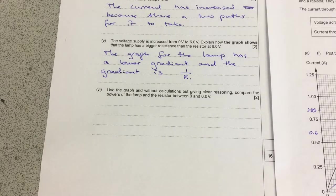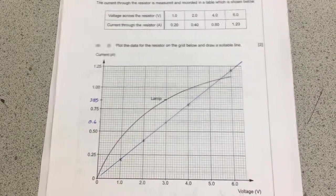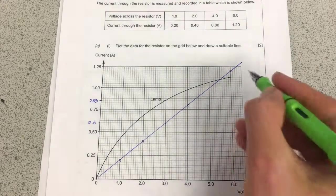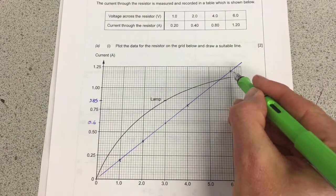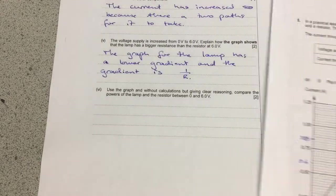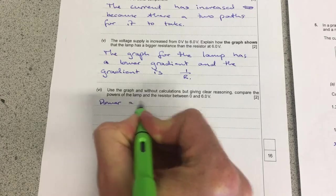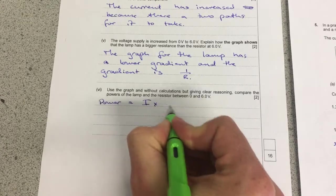Use the graph and without calculations, but giving clear reasoning, compare the power of these two things. So we'll come back to here. So I'm going to use an equation, but I'm not actually going to do the calculation. So can you see here how the current through the resistor is higher than through the lamp.